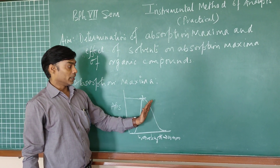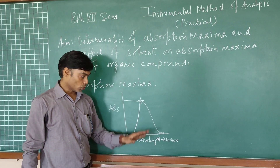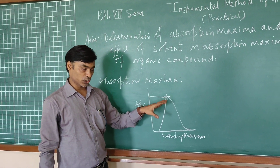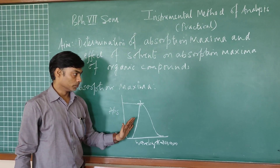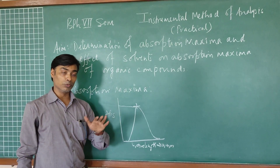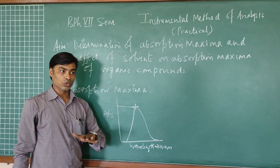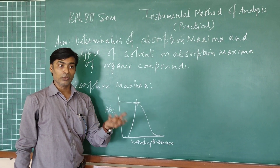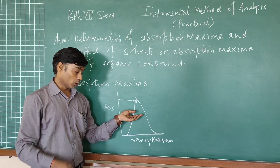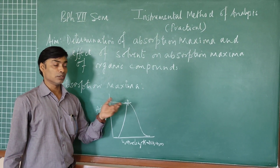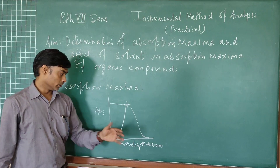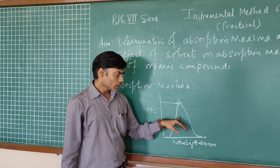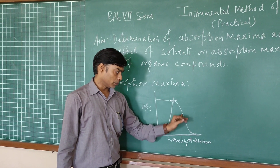The absorption maxima may shift or differ for the same solute depending on the solvent involved in preparation of the solution. The same compound may exhibit two different lambda max values in solvents of different polarity, or if we change the pH or ionic strength of the solvent, the absorption maxima of the same compound may get altered.